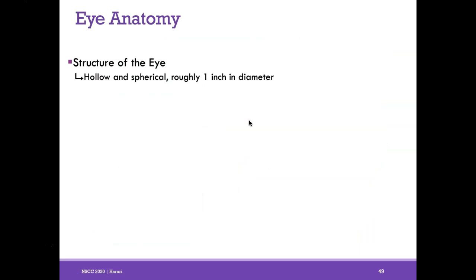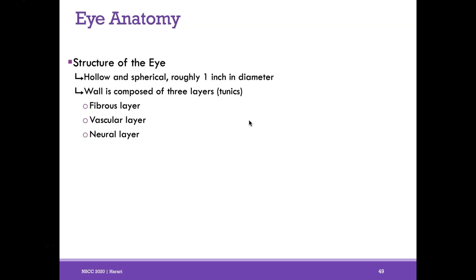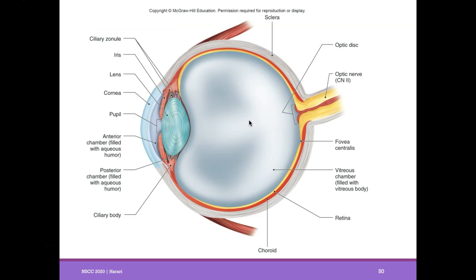The eye itself is composed of three layers. Think of the eye as a hollow sphere — about an inch in diameter — with a wall made of three layers: the fibrous layer, the vascular layer, and the neural layer. Inside, the spaces are filled with fluids that support the eye's structure and shape. In cross section you can see the three layers: the sclera, the choroid, and the retina, with fluid-filled chambers.